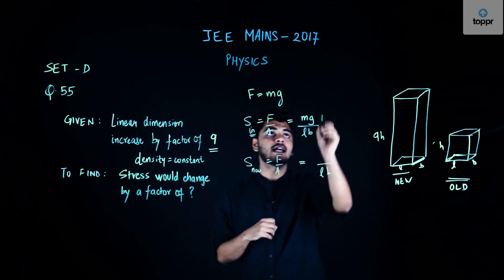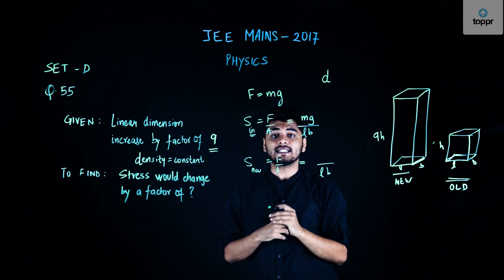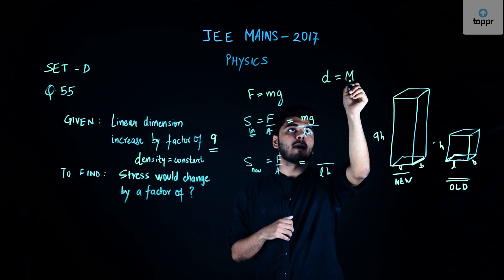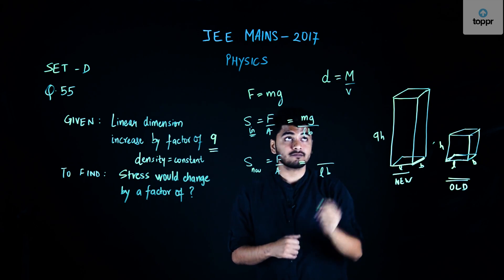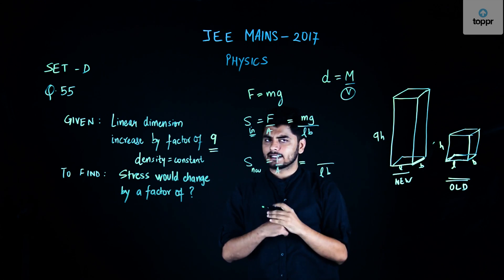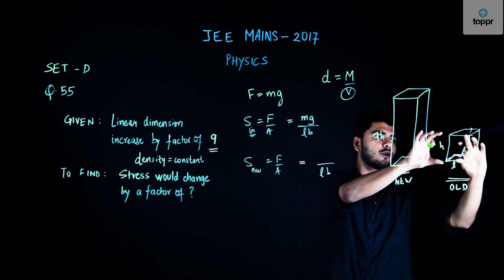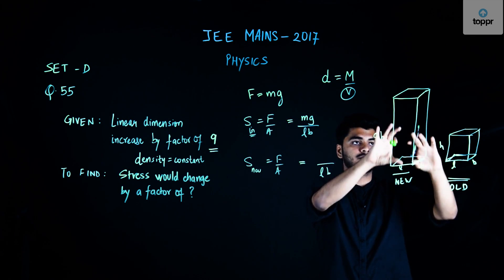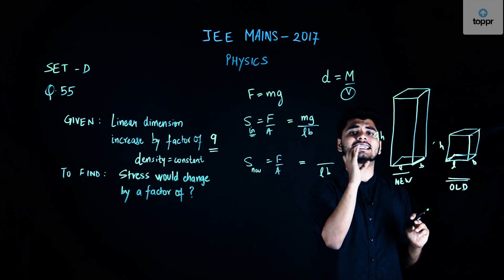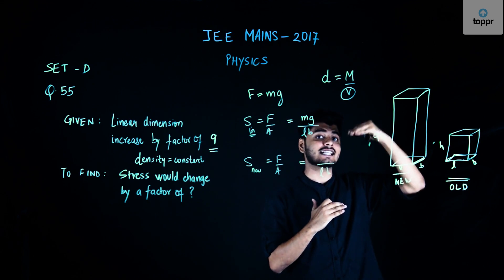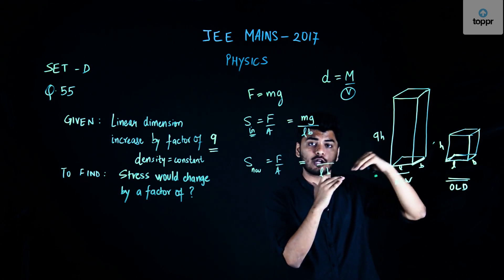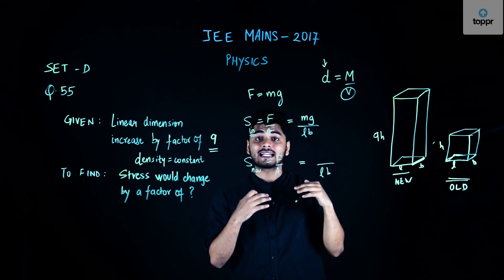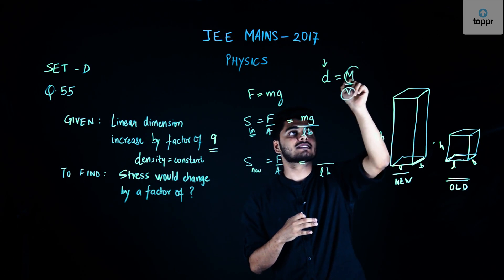Why would force increase? Because my density in this entire process remains constant. Density equals mass by volume. My volume increases—the new volume is clearly 9 times the initial volume. Since my height has increased by 9, my volume increases by a factor of 9. For density to remain constant, my mass must also increase.